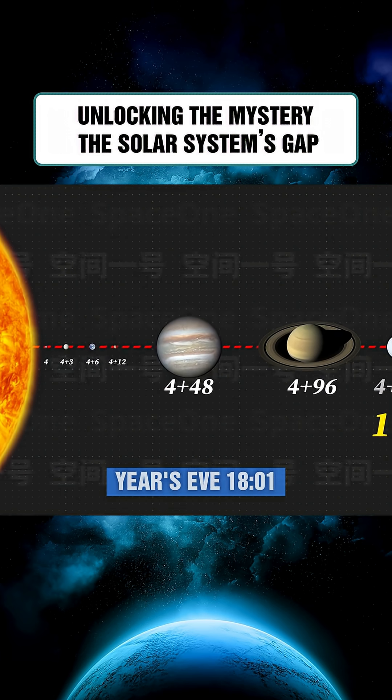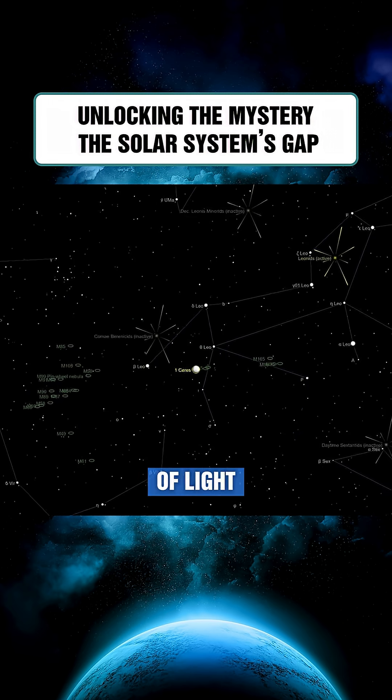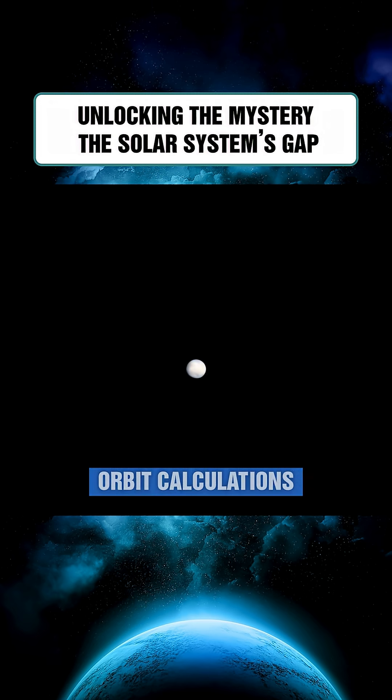On New Year's Eve 1801, Giuseppe Piazzi in Italy noticed a faint point of light. After two weeks of observation, he suspected it was the missing planet. Orbit calculations showed it lay at exactly the empty distance. Piazzi named it Ceres.